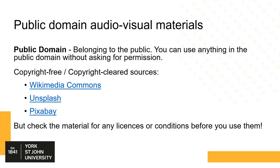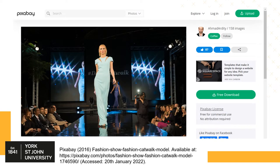Copyright can be complicated at times, but there are ways to find and use audio-visual materials that are free to use. Public domain audio-visual materials are works that belong to the public, with no copyright attached to them, so you can use them without asking for permission. Good sources for public domain works include Wikimedia Commons, Unsplash, and Pixabay, but check the materials for any licences and conditions before you use any of them. As an example, I found an image that is free to use on Pixabay. Before including it, I checked the licence conditions, which state that it is free to download, free to use even for commercial purposes, and no attribution is necessary. However, because I've taken a screenshot of the webpage for this video, I've referenced Pixabay.